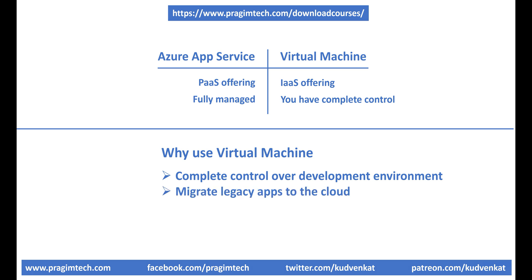Another reason could be that you have an on-premise legacy app that depends on custom middleware and runtime components. You want to migrate this app to the cloud, but since it is a legacy app with its own custom middleware and runtime requirements, it may not have an equivalent platform as a service offering. So you may want to create and use a VM instead. With a virtual machine, you have complete control and can install any custom software components you want — basically, it provides the easiest migration path. You can even lift and shift an on-premise custom legacy app to a virtual machine in the cloud.